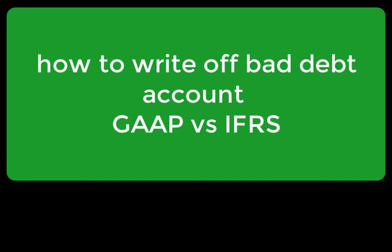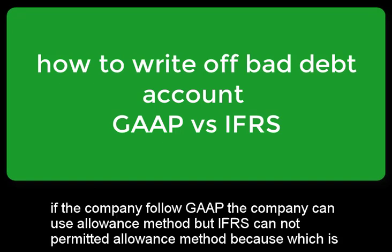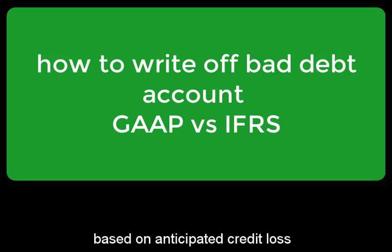The allowance method is based on expected amounts. The company is given the percentage of past experience. If you have past experience, you can pay for the cost of past experience. IFA is a good example. If you want to take a look at the allowance method, I will look at the price which is based on anticipated credit loss.